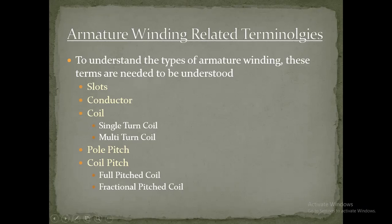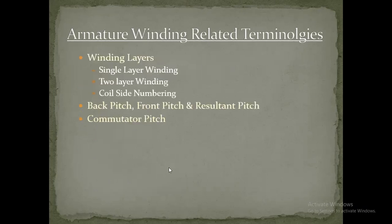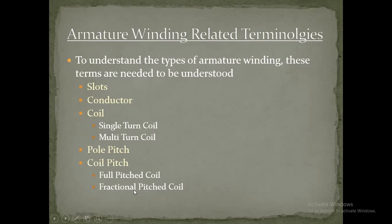A coil is a bunch of conductors. A coil may consist of a single turn coil or a multi-turn coil. The concept of pole pitch is the distance between the center of one slot to the center of the next adjacent slot — this separation distance is called pole pitch. Coil pitch is similarly the distance from the center of one coil to the center of the adjacent coil, and it consists of two types: full pitched coil and fractional pitched coil.